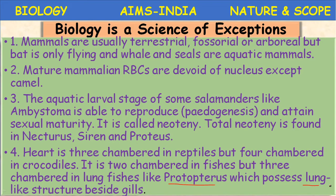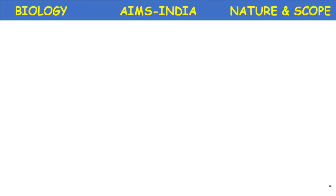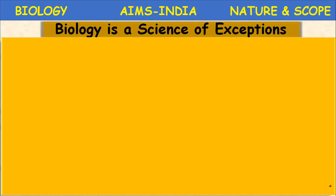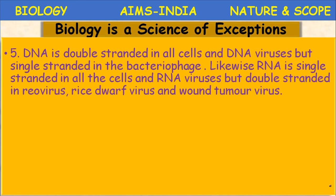To summarize what an exception means: generally all organisms in a group possess one characteristic feature, but one single organism in that group may possess a different characteristic — that is called an exceptional or unique feature. DNA is double-stranded in all cells and DNA viruses, but single-stranded DNA is present in the bacteriophage virus.